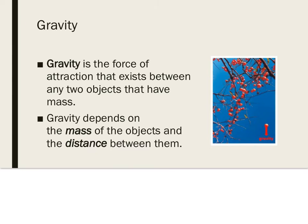Gravity is the force of attraction that exists between any two objects that have mass. Gravity depends on the mass of the objects and the distance between them. Gravity keeps the planets orbiting around the sun, and it pulls objects on earth toward the earth's center. For example, gravity causes fruit on a tree to fall to the ground.